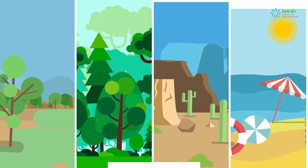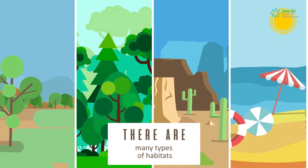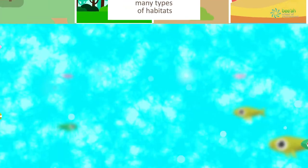There are many types of habitats: grasslands, forests, deserts, oceans.